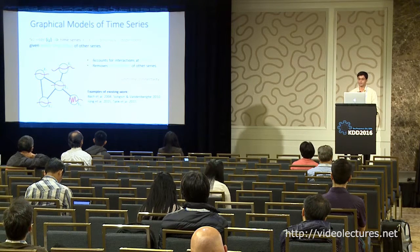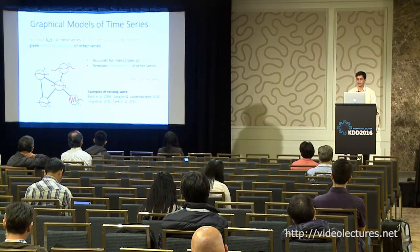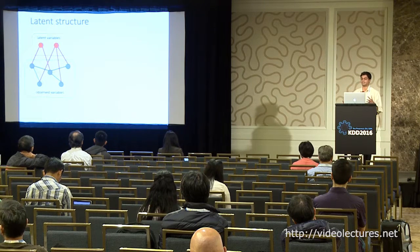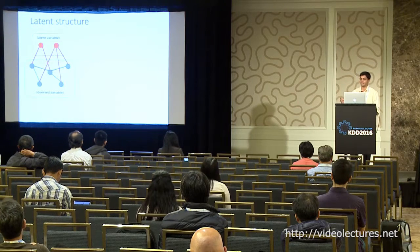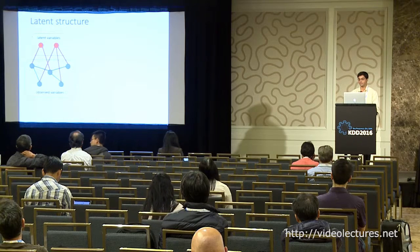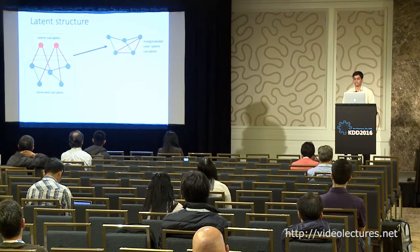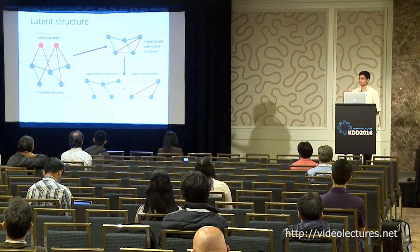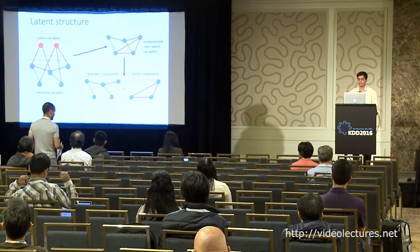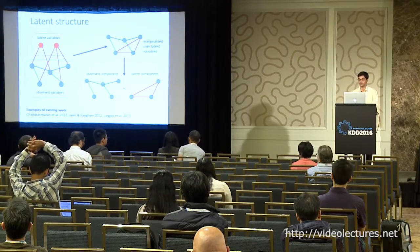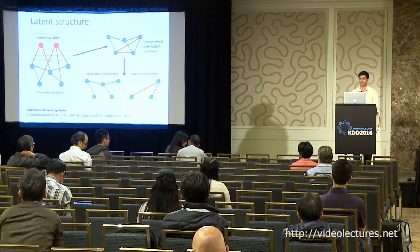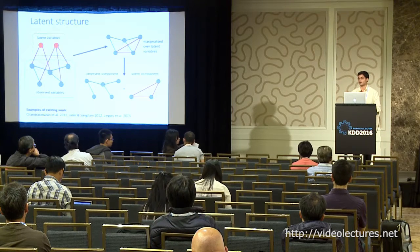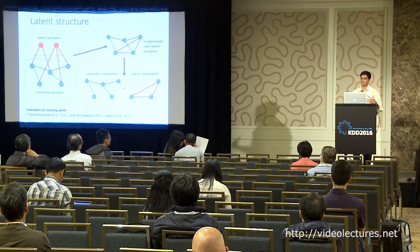There is some existing work in learning graphical models of time series, but there is even more limited work learning graphical models of time series while incorporating latent structure. You can think of an example where we have observed variables with some conditional independence structure that are affected by interactions with latent variables. If we marginalize out over these latent variables, we end up with a graph that is much denser than expected. We want to decompose this into a sparse component between observed variables and a latent component that removes all these spurious connections. Both the conditional independence between time series and latent structure are important when applying this to MEG data.